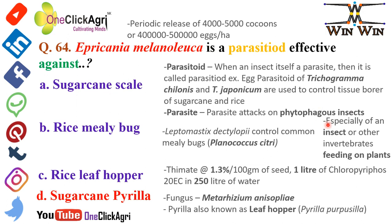With respect to the rice mealybug, Leptomastix dactylopii controls common mealybugs (Planococcus species). For rice leaf folder control, use thymate at 1.3% per 100 grams of seeds, or 1 liter of chlorpyrifos 20 EC in 250 liters of water per hectare. Sugarcane pyrilla is also controlled by the fungus Metarhizium anisopliae. Sugarcane pyrilla is also known as a leafhopper — Pyrilla perpusilla. Please remember this.